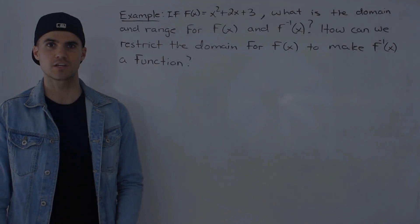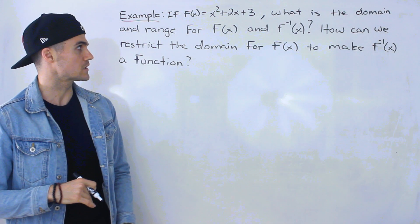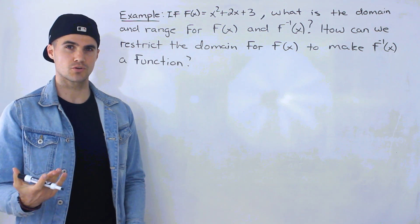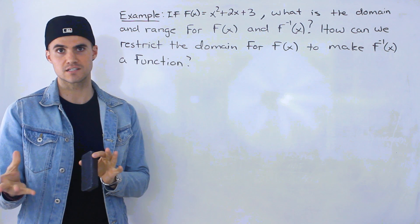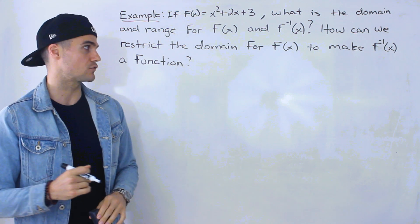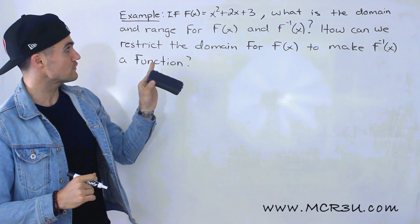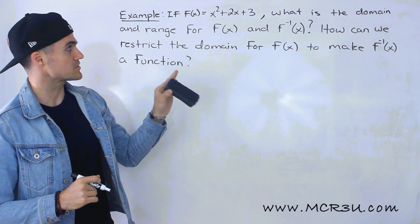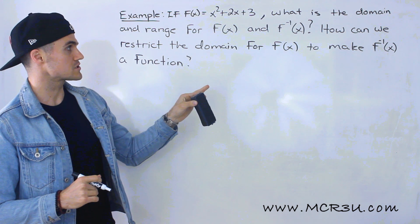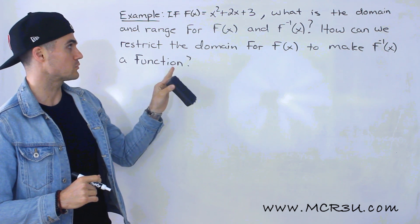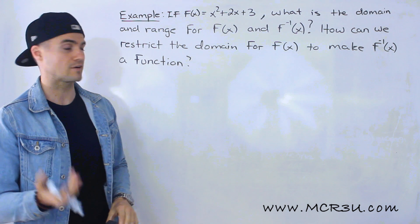Welcome back. Patrick here, and in this video I'm going to go through an example showing how the domain and range of a function relates to its inverse. We have f(x) = x² + 2x + 3. What is the domain and range for f(x) and its inverse, and how can we restrict the domain for f(x) to make the inverse a function?